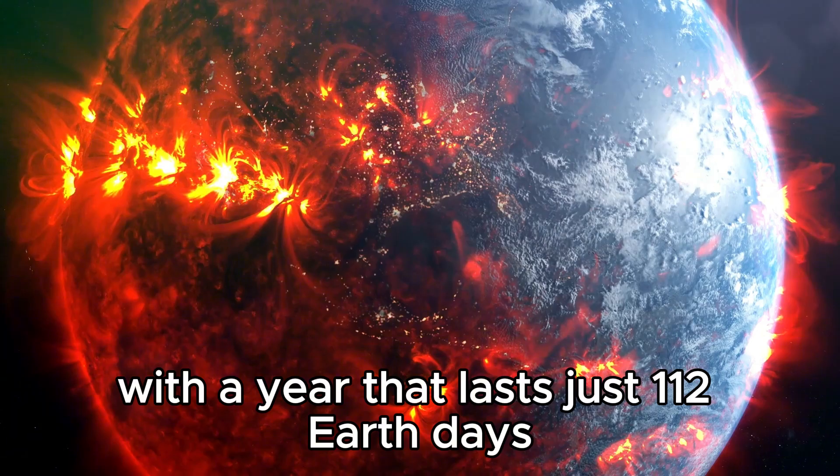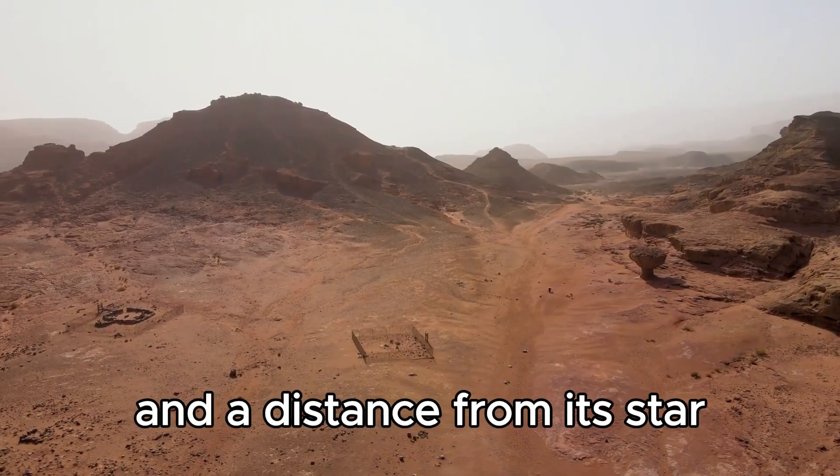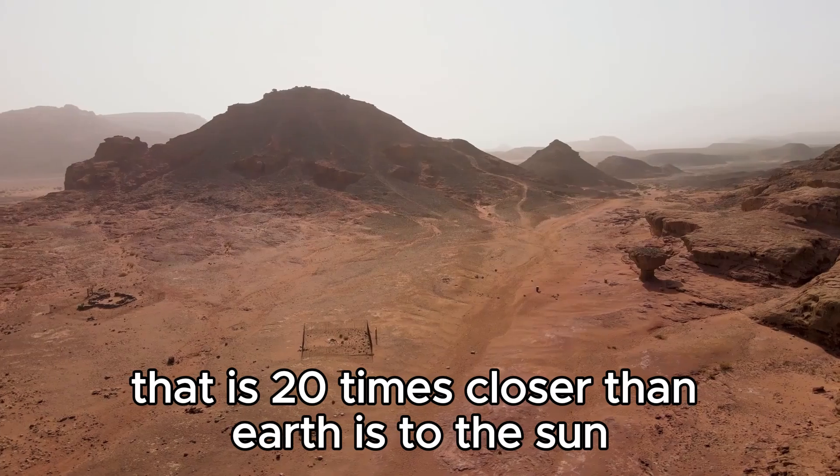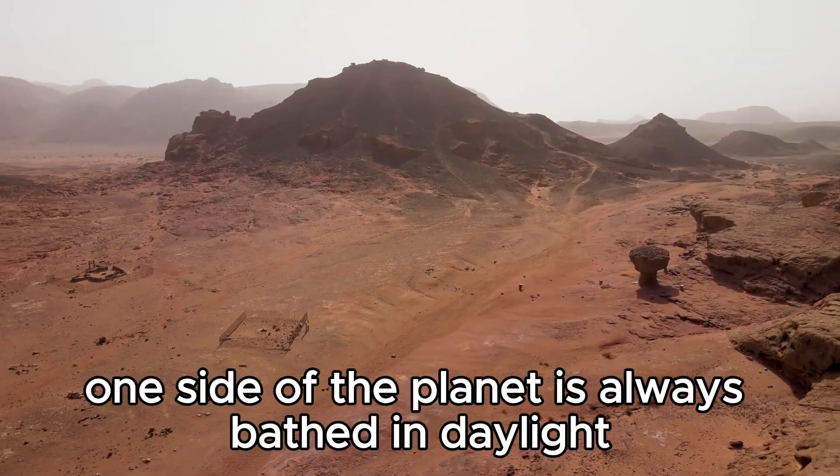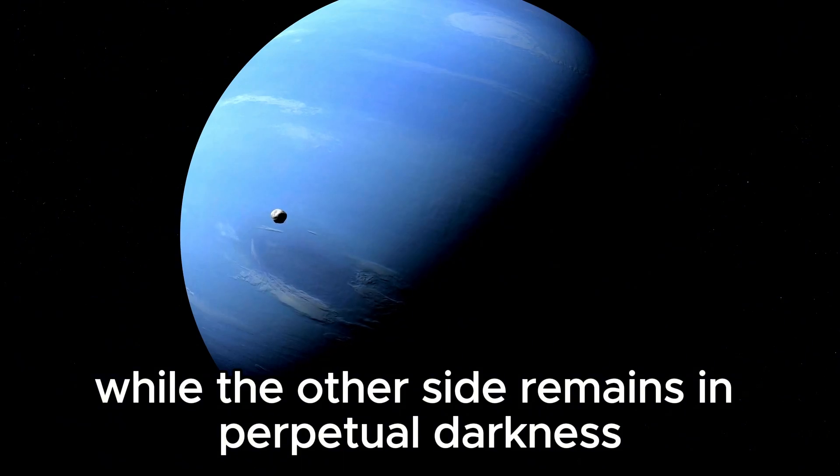With a year that lasts just 112 Earth days and a distance from its star that is 20 times closer than Earth is to the Sun, it is likely that one side of the planet is always bathed in daylight while the other side remains in perpetual darkness.